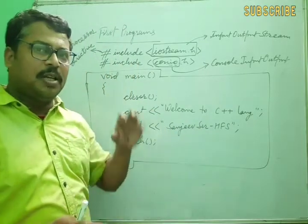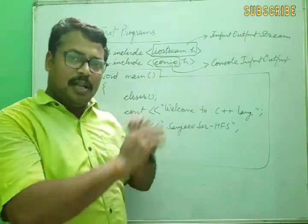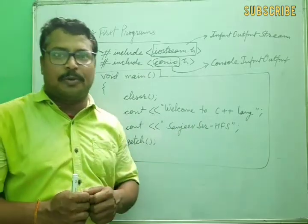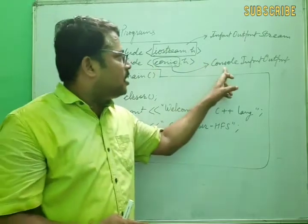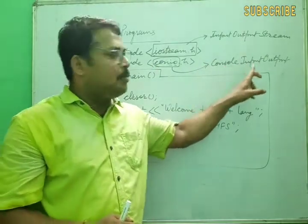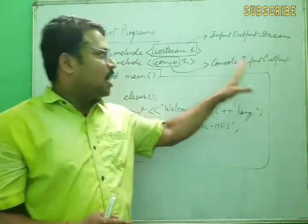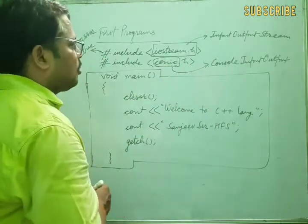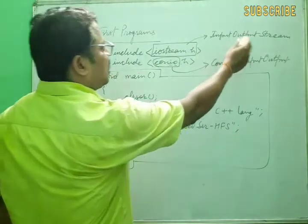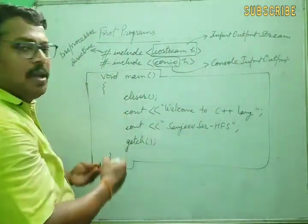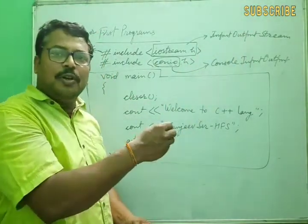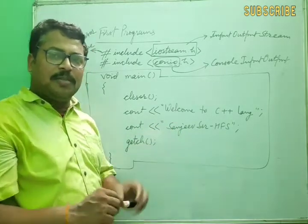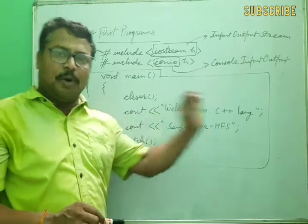In this situation the monitor screen will be cleared before showing our program's output. So when any console-related input/output operation is performed — such as clearing the screen — we need conio.h. If we need to take input from the keyboard or display any message on the monitor, we use this header.